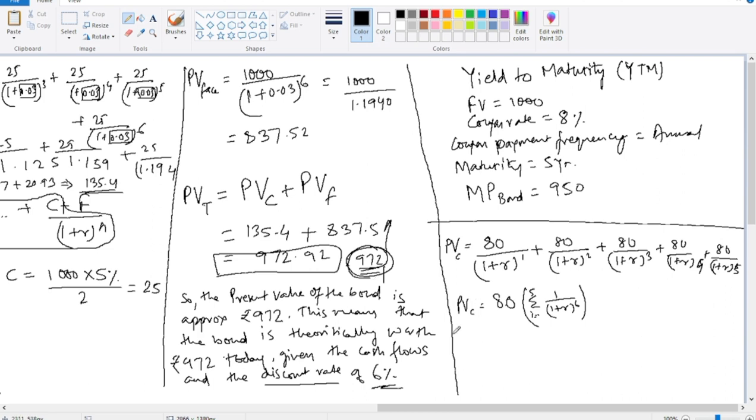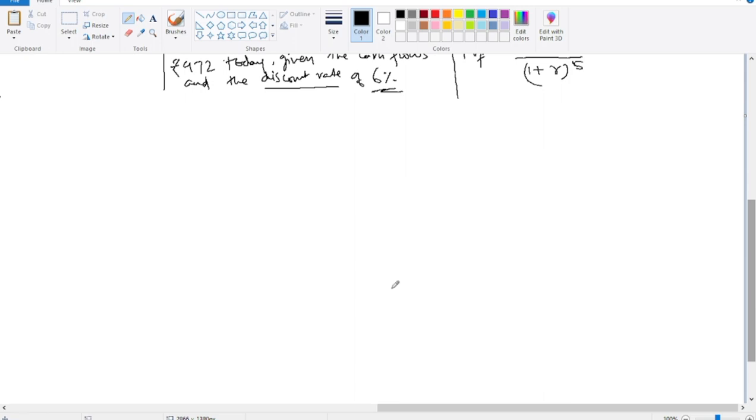What will be present value of face? Present value of face, we will get 1000 rupees divided by 1 plus our rate of interest r to the power, how many years? 5 years. The present value of bond is equal to present value of coupon plus present value of face.